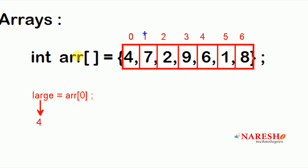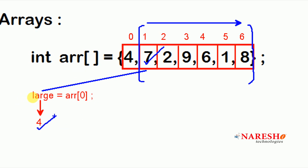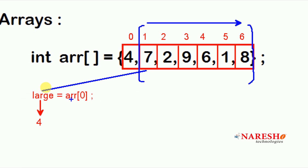Now we need to compare `large` with the other elements, from index 1 to the last index. Initially index starts at 1. Compare that index element with `large`: if the index element is greater than `large`, store that index element into `large`. Here index element 7 is greater than 4, so now `large` is 7.